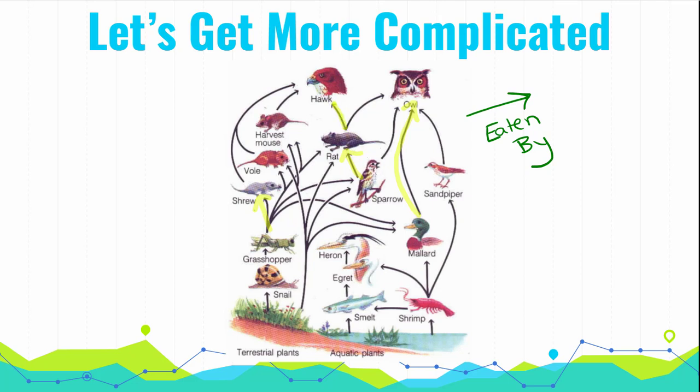When you're trying to figure out your levels, so which is which, always start with your producers. Remember your producers are your plants. Once you find your producers, finding your other levels are pretty easy. Everything other than a producer is a consumer.